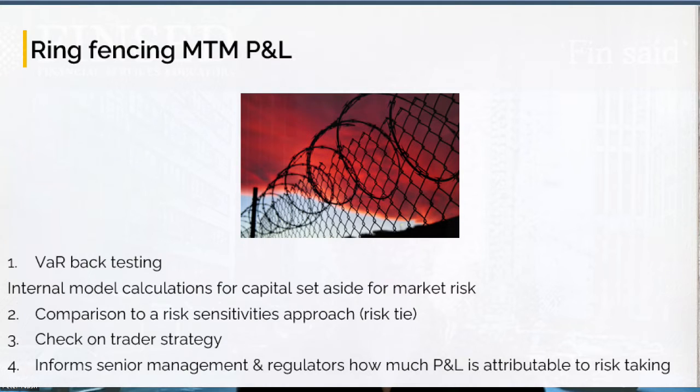Number three: it enables us to check on the trader's strategy. So let's say you're doing the controlling for a fixed income desk, and you see some equity or commodity risk flowing through their mark-to-market report — that's odd. It would trigger an investigation; perhaps the trade is being booked incorrectly, and hopefully the desk aren't engaging in commodity or equity trading risk. Number four: isolating mark-to-market P&L informs senior management and regulators how much profit and loss is being driven by proprietary trading or risk-taking.